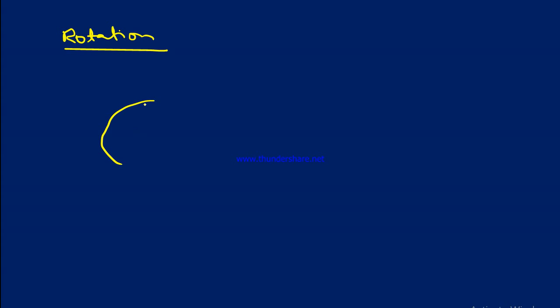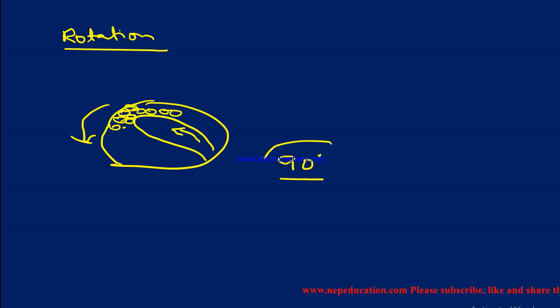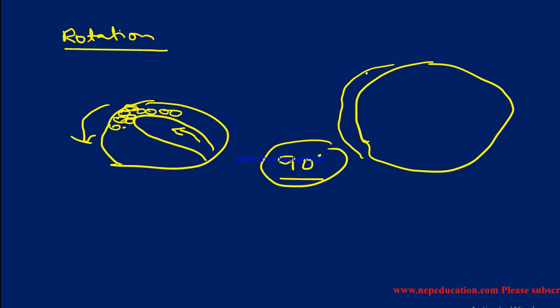The fourth step is rotation. In the rotation stage, the vegetal hemisphere has more yolk material. Because of the migration of megameres, the center of gravity changes and the embryo rotates by 90 degrees inside the vitelline membrane. After rotation, the gastrula has formed, and you can see three germinal layers: ectoderm, mesoderm, and endoderm.